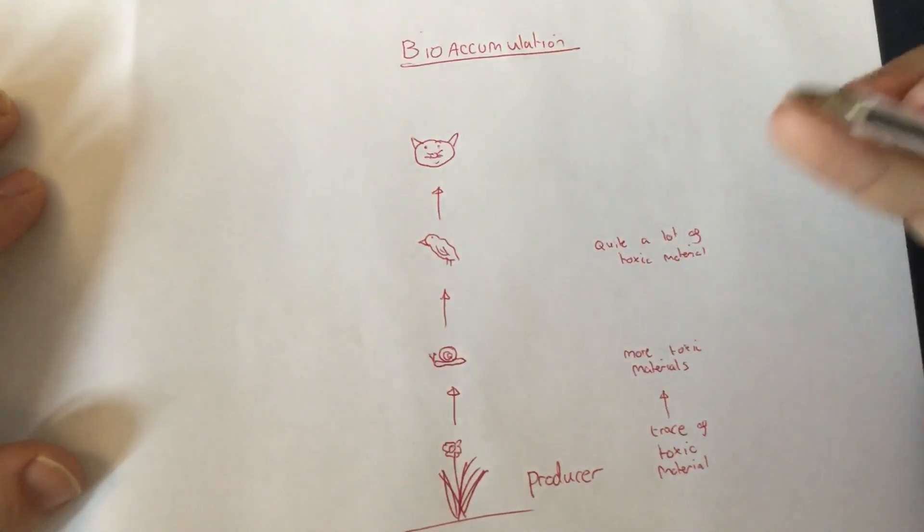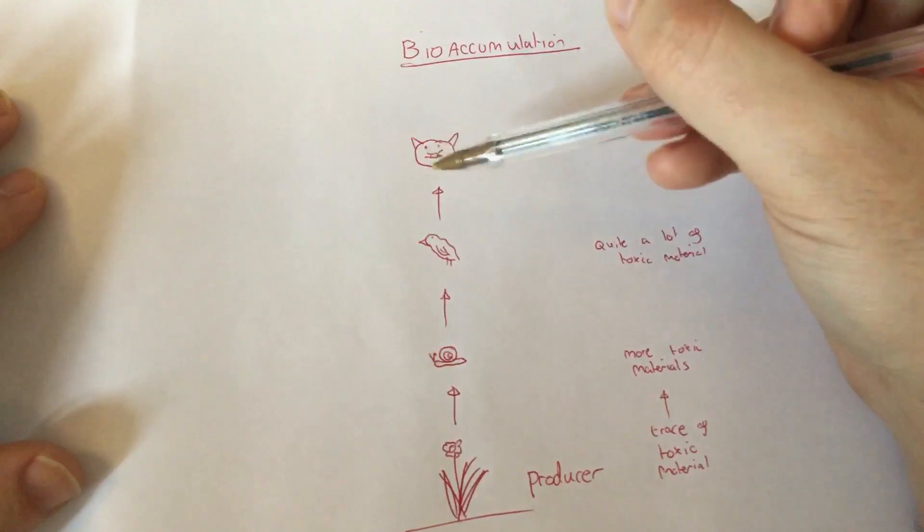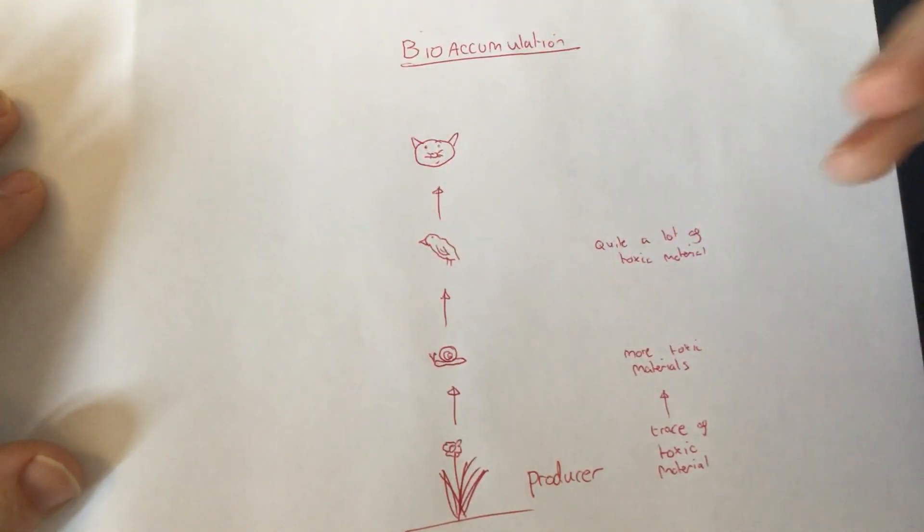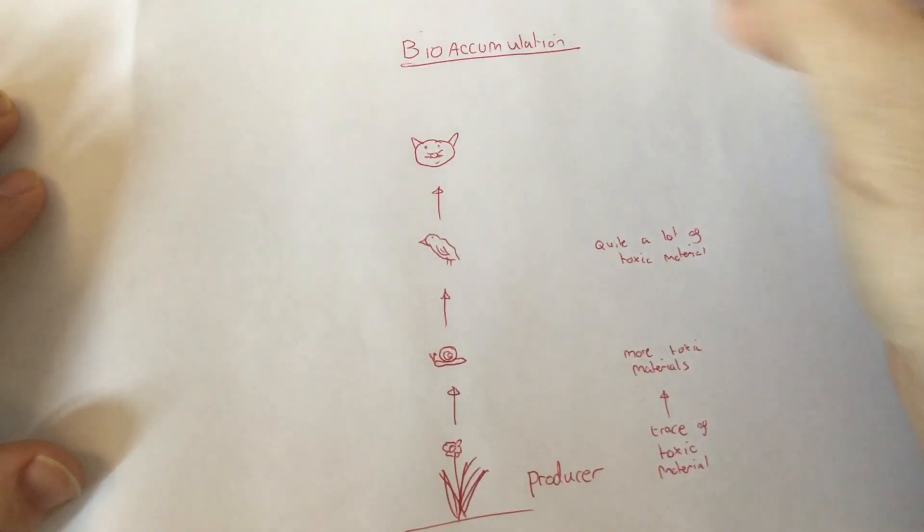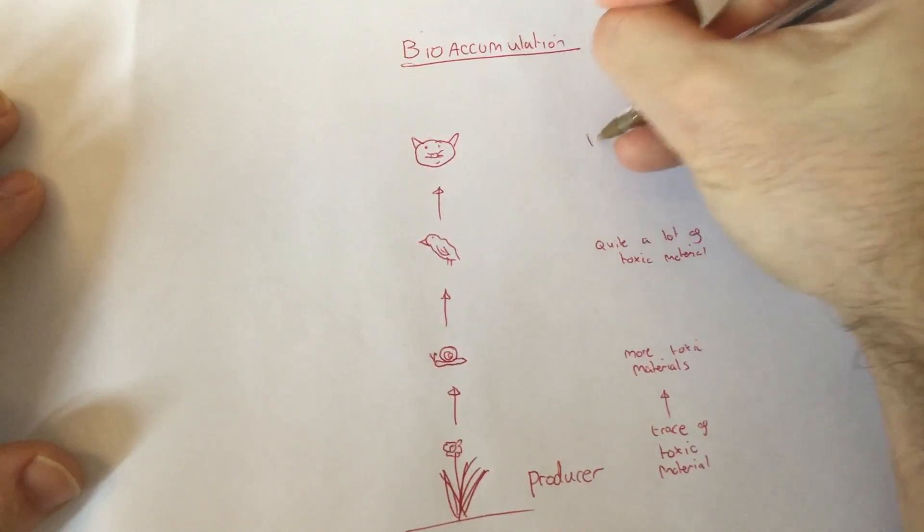And finally, it happens once again. The cats come along, they eat the birds and you end up with even more toxic material. So you end up with large amounts.